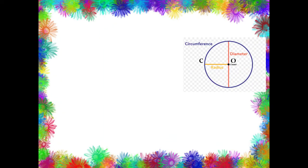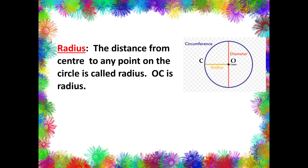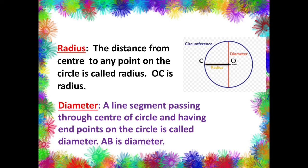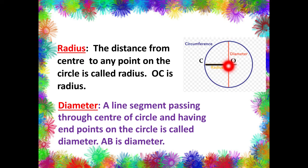Now let us learn about radius. Radius is the line segment that joins the center to any point on the boundary of the circle. Next, let us learn about diameter. Diameter is any line segment that joins any two points on the boundary of the circle, but it passes through the center. Here, AB is the diameter.